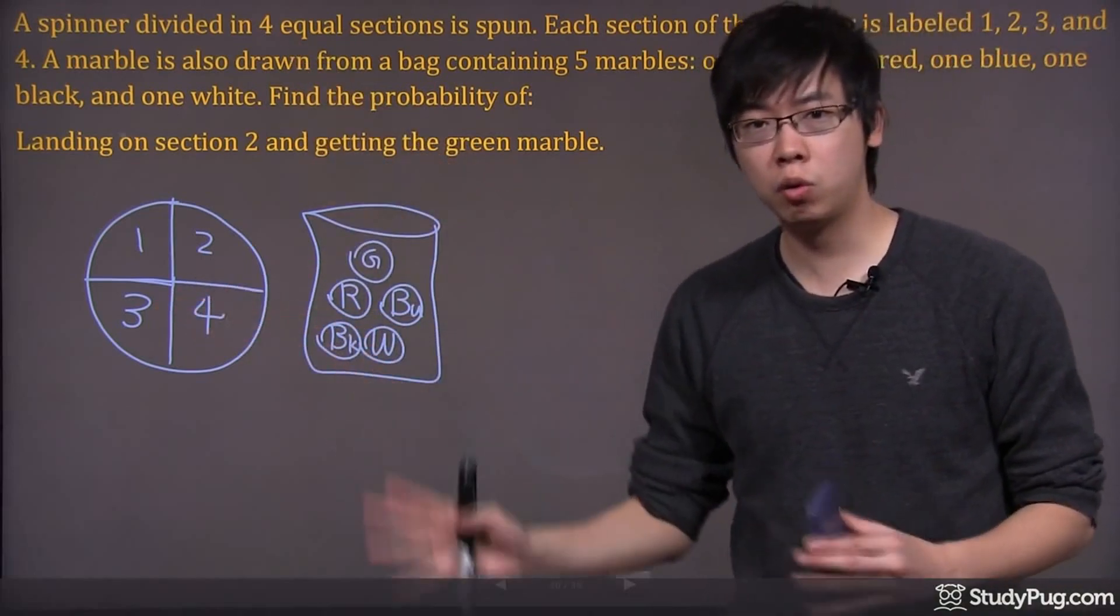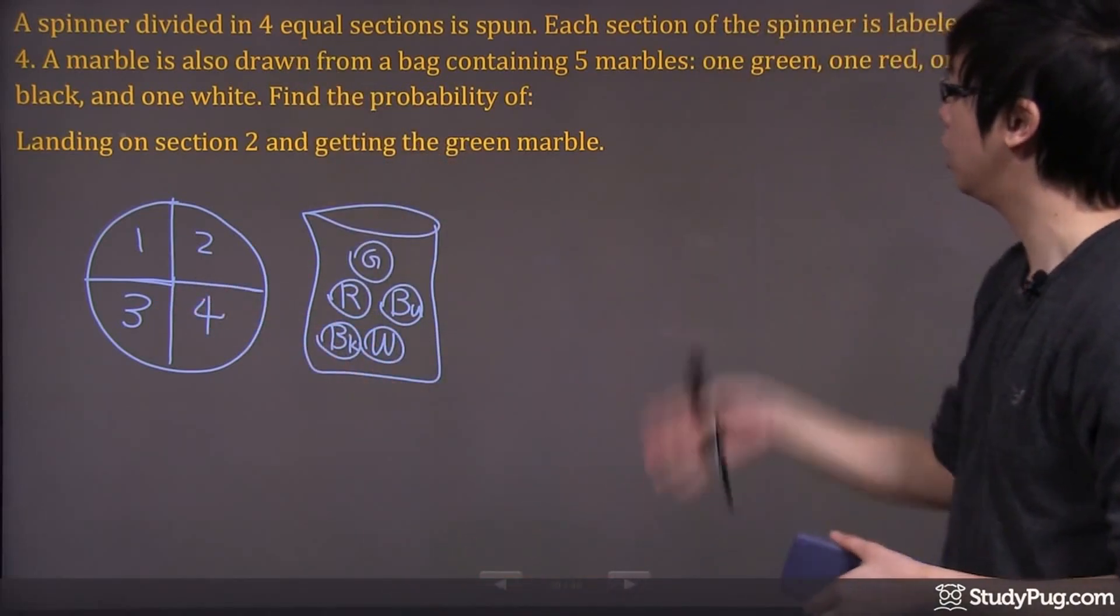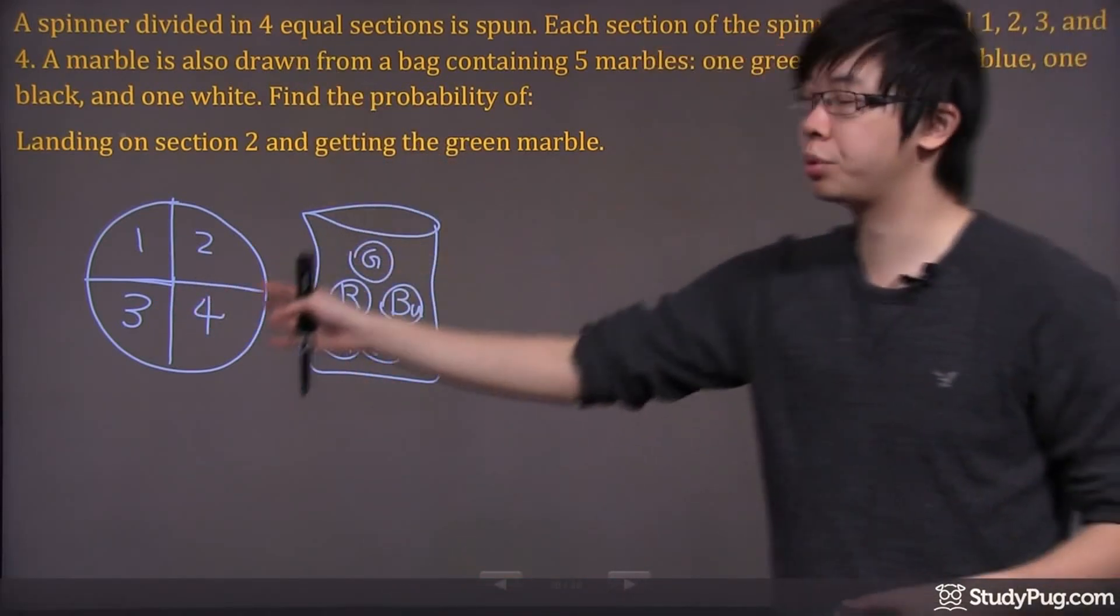You get a spinner divided into four equal parts. You're going to spin it, and each section is labeled one, two, three, and four.